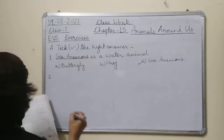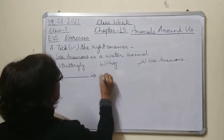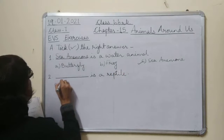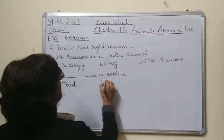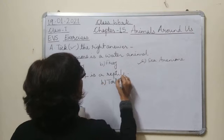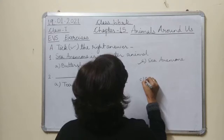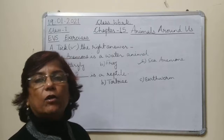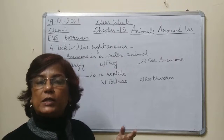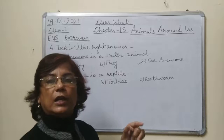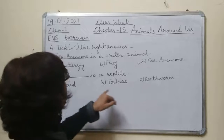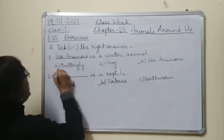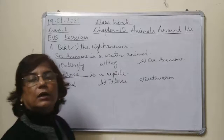Second question: which is a reptile? The options are a) toad, b) tortoise, and c) earthworm. Earthworm may come in the category of insects also. The answer is b — tortoise. Tortoise is a reptile.